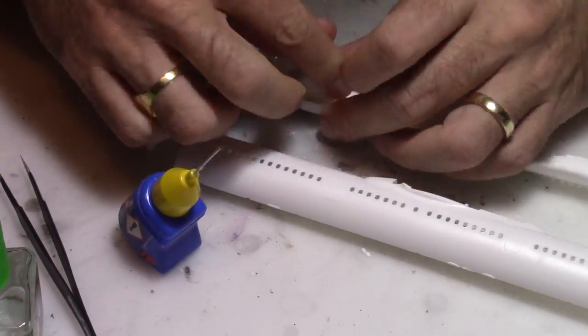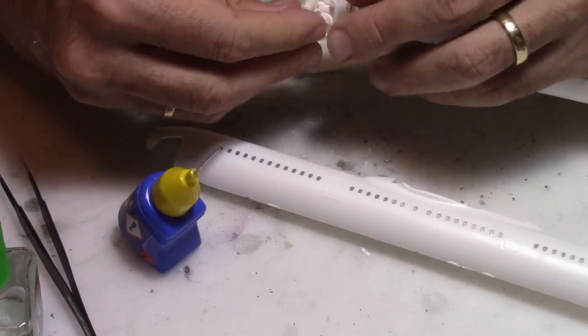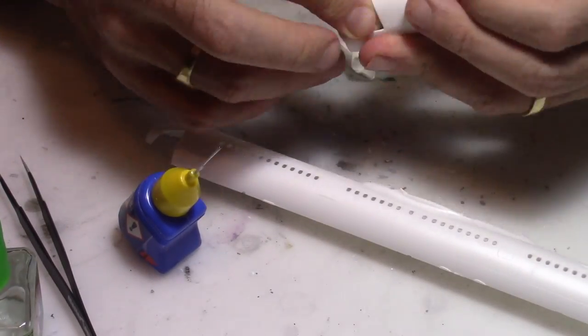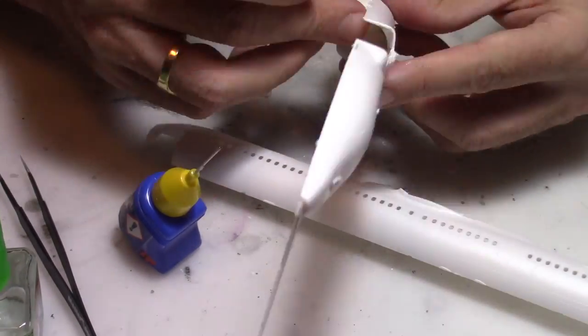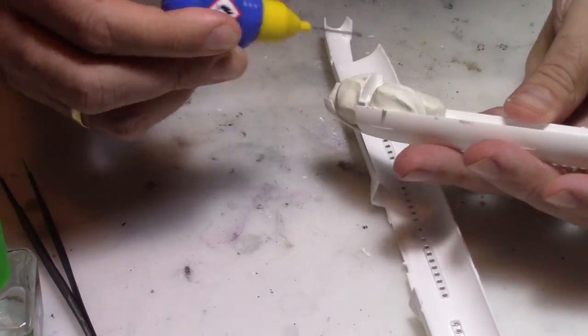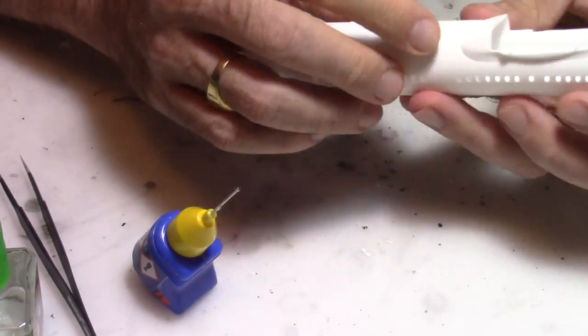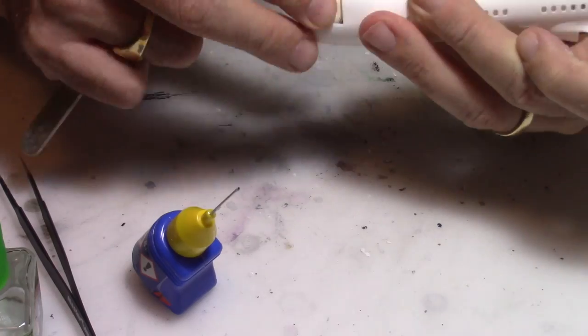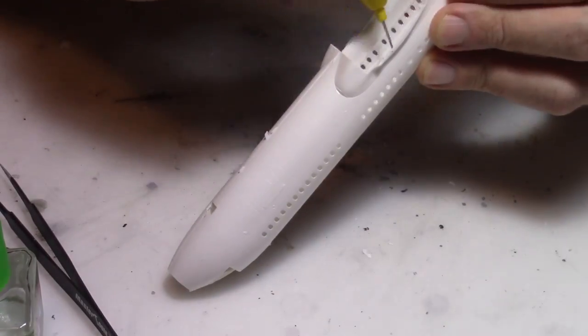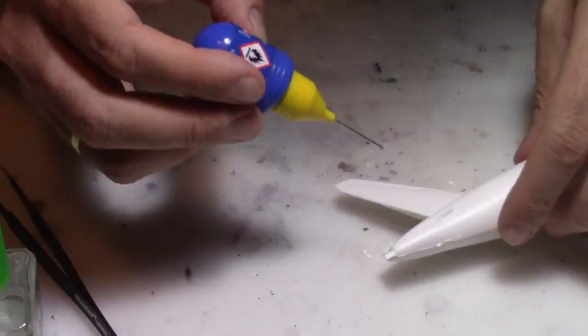After that we're going to put the nose wheel well below the cockpit, and then add some modeling paste, some play-doh, on the front as ballast to avoid having the airplane sitting on its tail.